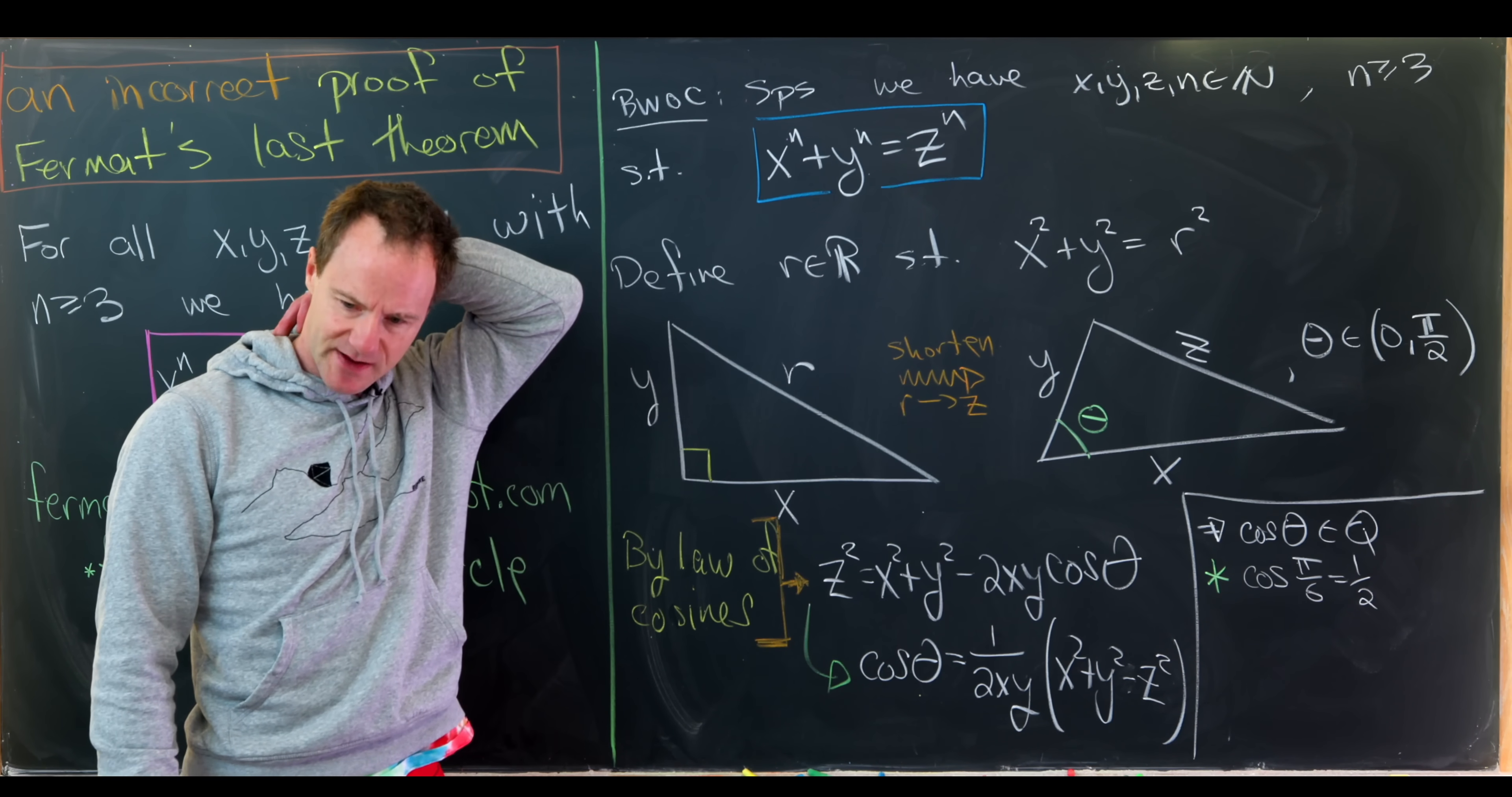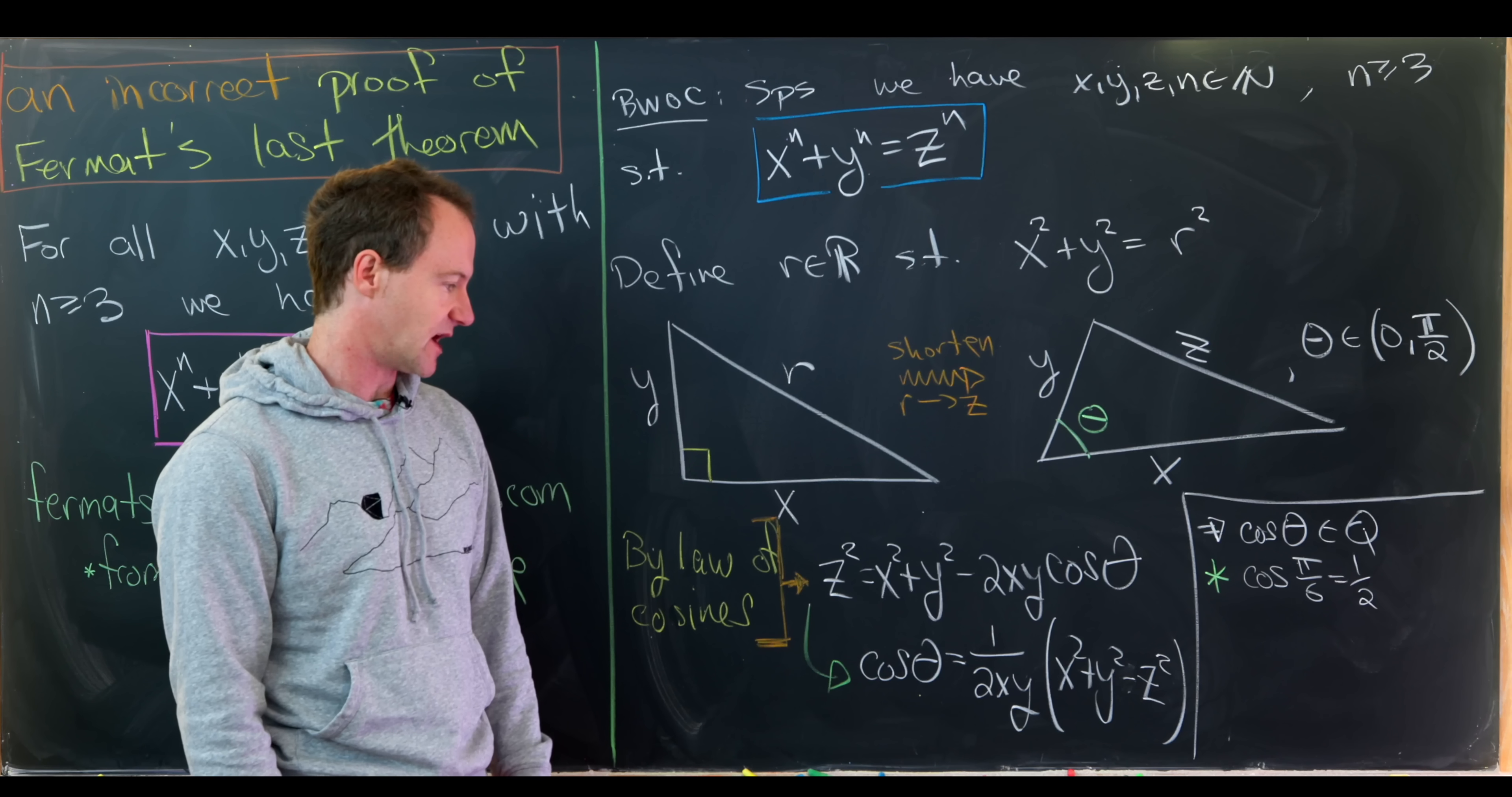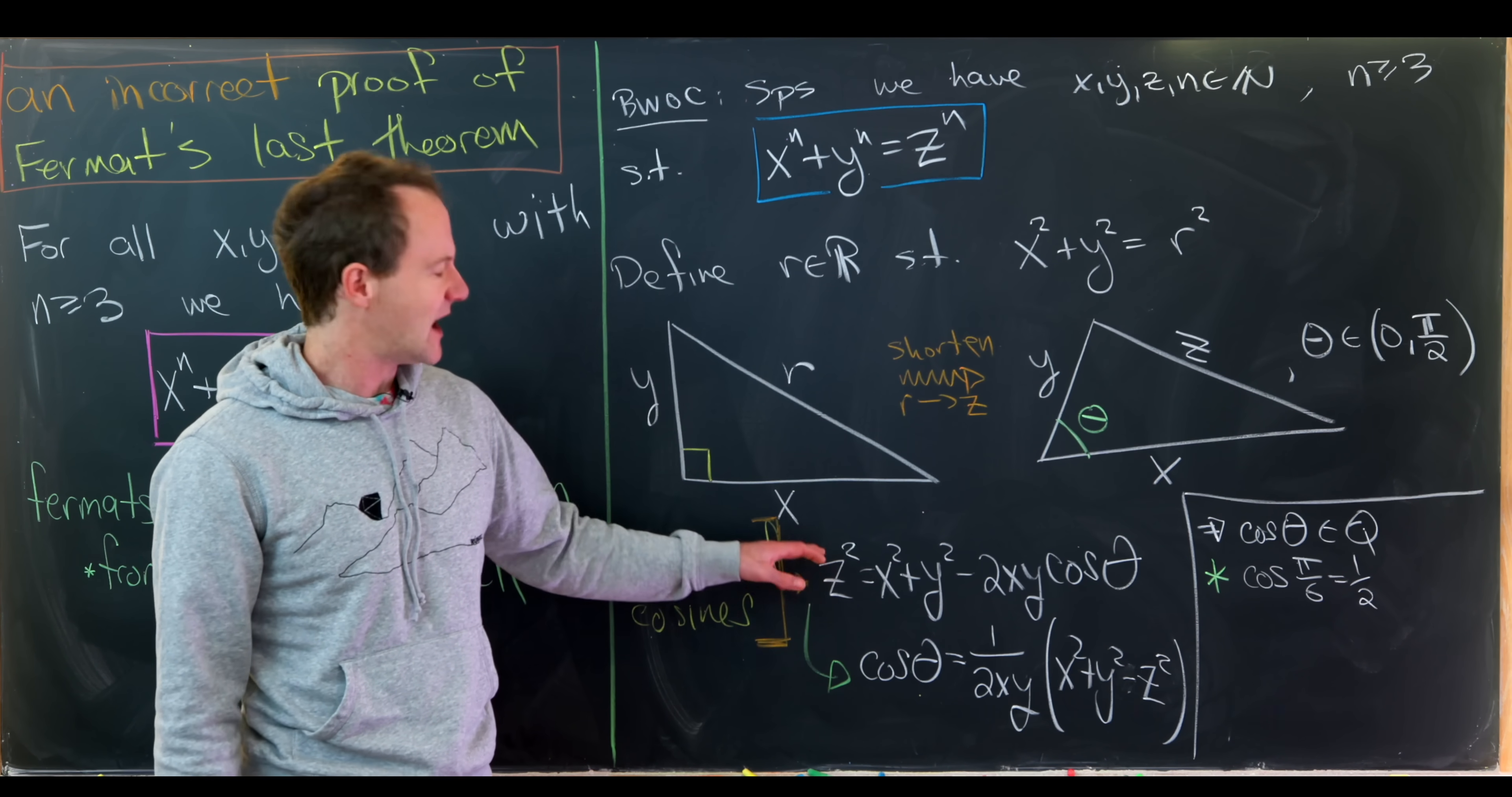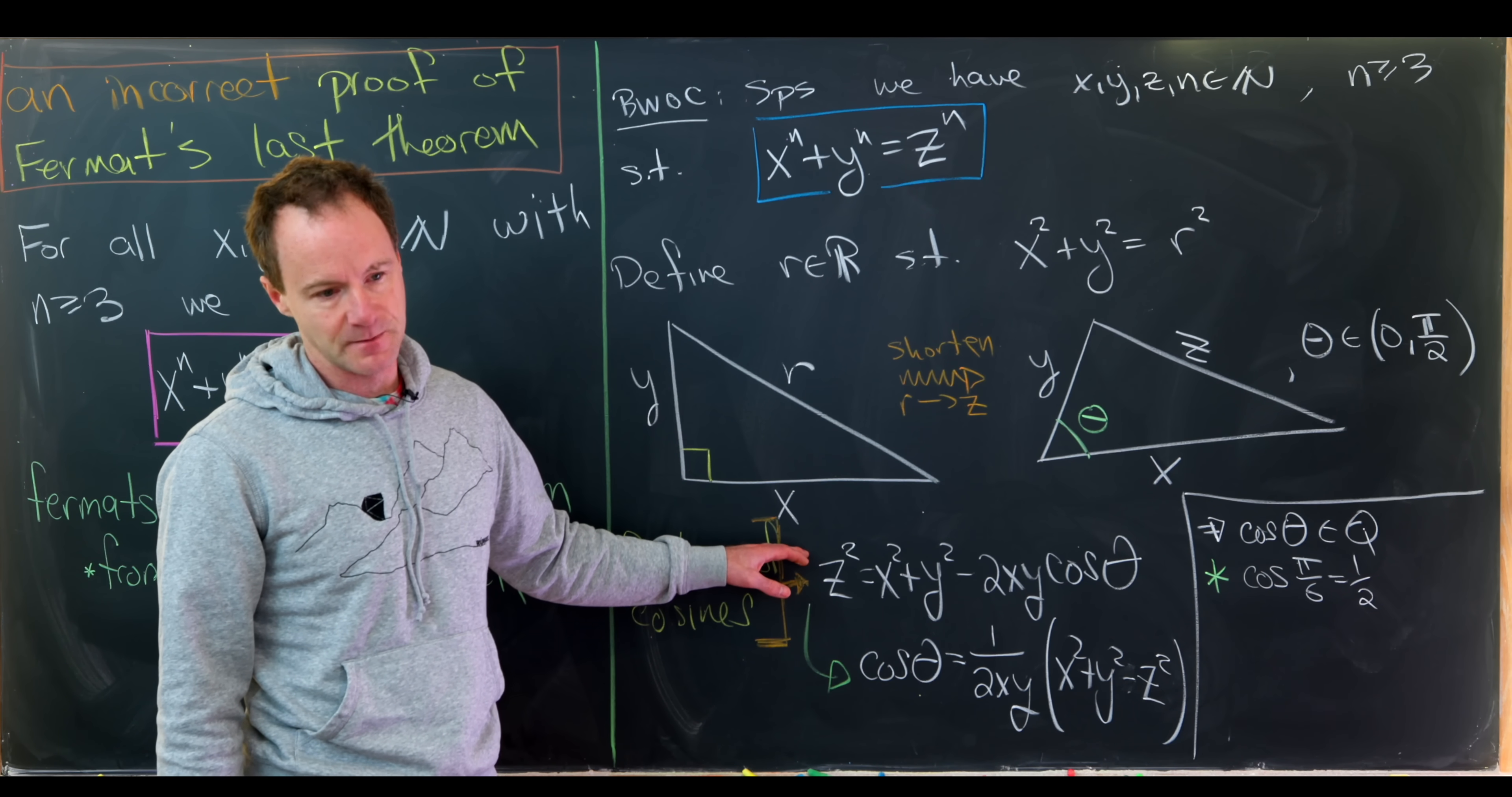And so you might try to patch this and say, well, let's say cosine is not allowed to be a half. Cosine of pi over 6 is not allowed to be a half. And that would bring us to some sort of quadratic diophantine equation here that we would show has no solutions. I think it probably doesn't have no solutions. But let's say we did show that it has no solutions.